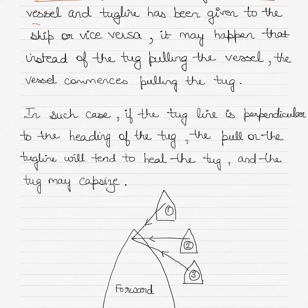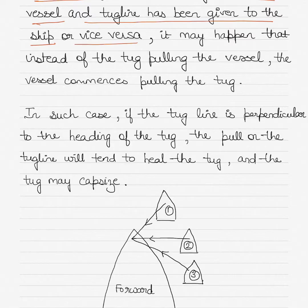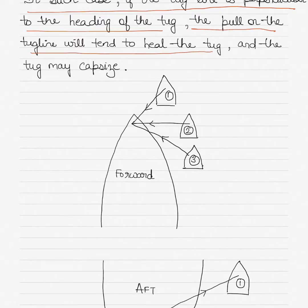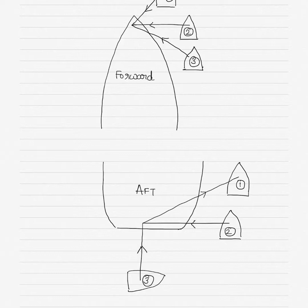When the tug is maneuvering with the vessel and a tug line has been given to the ship, or vice versa — it could be the ship's line given to the tug or the tug line given to the ship — in any case, if the tug is attached to the ship through some line, it may happen that instead of the tug pulling the vessel, the vessel starts to pull the tug. In such cases, if the tug line is perpendicular to the heading of the tug, the pull on the tug line will tend to heel the tug, resulting in its capsizing, which could be a very serious incident.